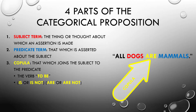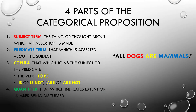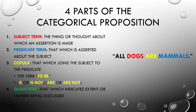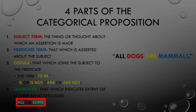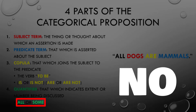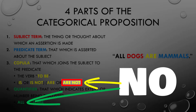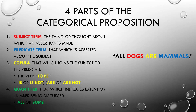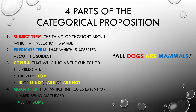The copula determines what we call the quality. The fourth and final part is the quantifier, that which indicates extent or number — what we call the quantity. In a categorical proposition, it's either the whole category or some part of it, so we use the words all or some. In the universal negative, the word 'no' stands in for both the quantifier all and the negative aspect of the copula. In our example, the quantifier is all.